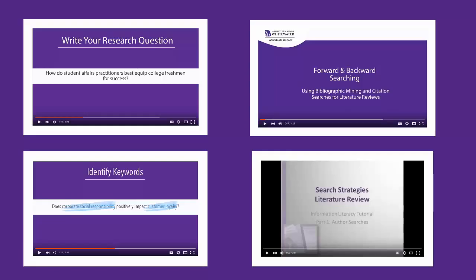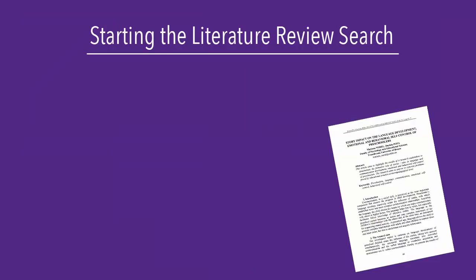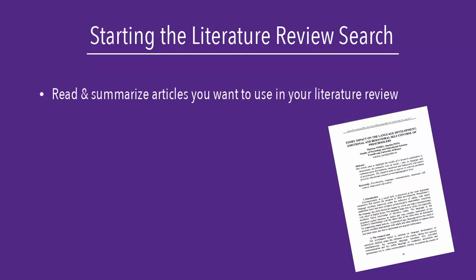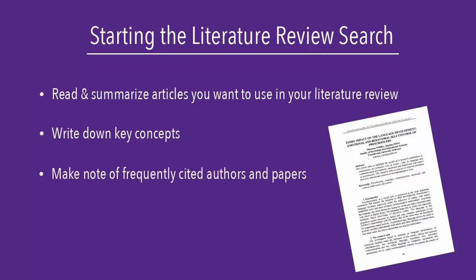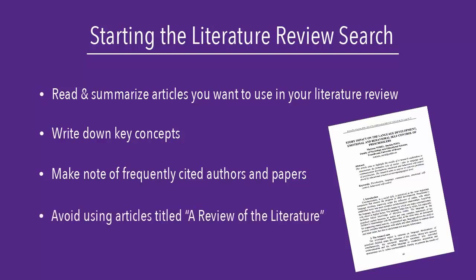Now you can begin searching. For more information on the search process, check out the library's videos for planning a search strategy, forward and backward searching, and author searching. When you find an article relevant to your research topic, take the time to read the article and summarize it. Make note of any key concepts and use those keywords to improve your searches. Look for authors or papers that are frequently cited in works that you are reading, as this indicates the research is highly valued in the field.